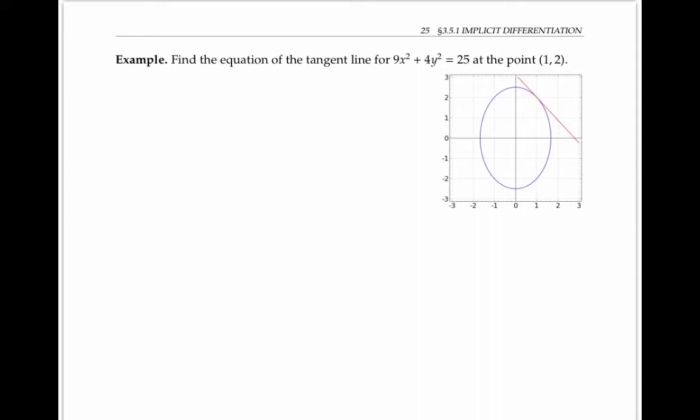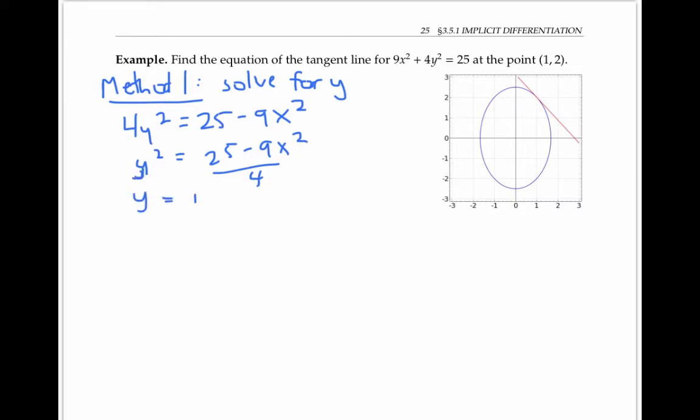So there are at least two ways we could proceed. First, we could solve for y and then use the same techniques that we've been using. So if we solve for y, we get 4y² = 25 - 9x². So y² is (25 - 9x²)/4, which means that y is plus or minus the square root of (25 - 9x²) over 2.